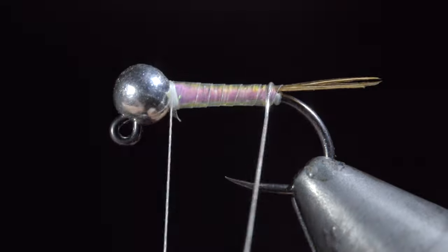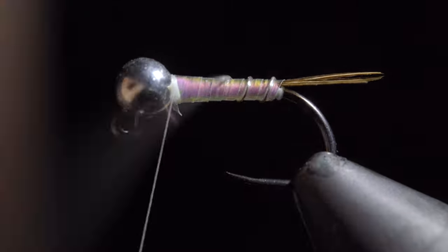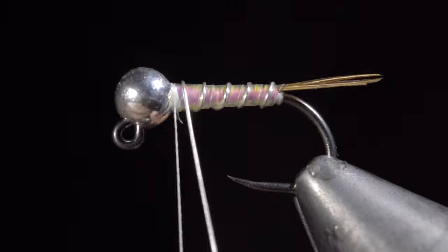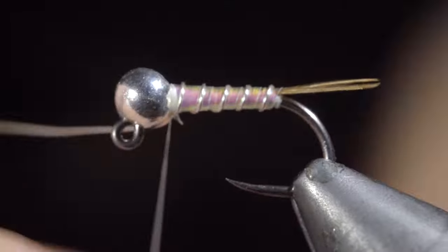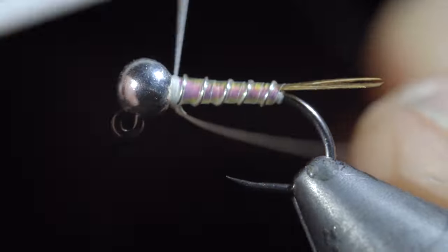We'll repeat the steps with our silver wire, except this time we will wrap it forward in open spirals. Once again securing and helicoptering the excess free.